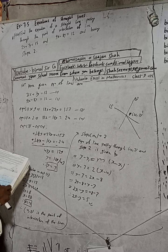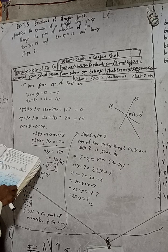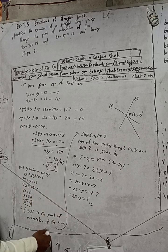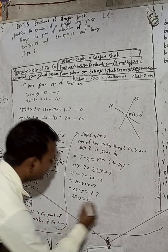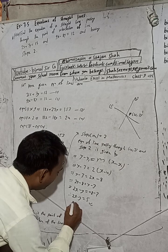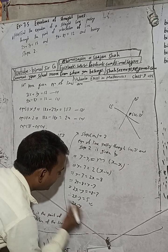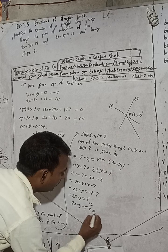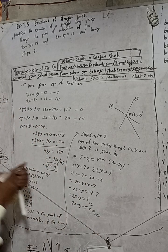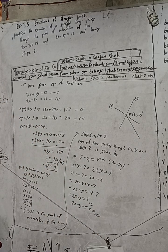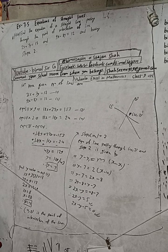In the book the answer is given as 2x - y - 5 = 0, which is the same equation rearranged. Both formats are correct, you can write either one. Dear students, this is the required solution. See you in the next video.